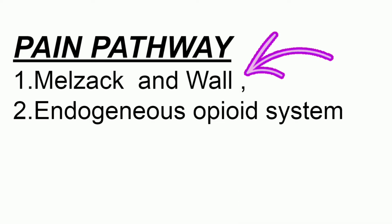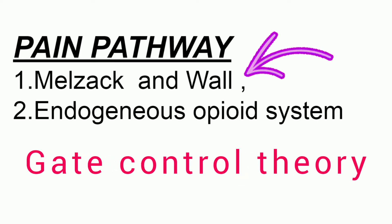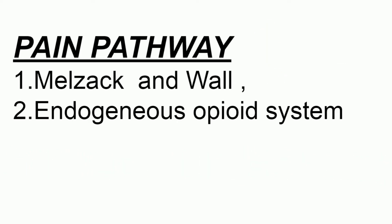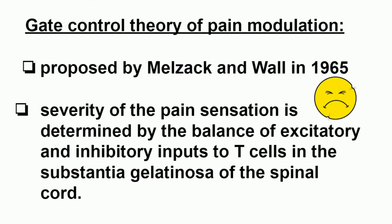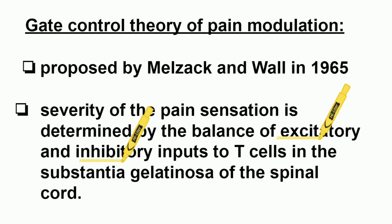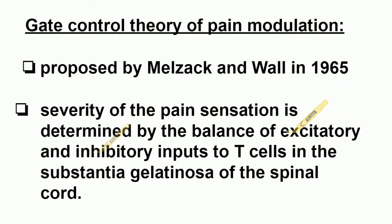In this video, Melzak and Wall's gate control theory and the endogenous opioid system will be covered. When we have a pain sensation, excitatory and inhibitory inputs are available. Melzak and Wall proposed gate control theory, which was proposed in the year 1965.